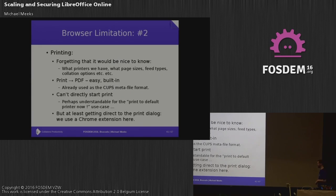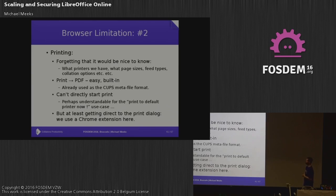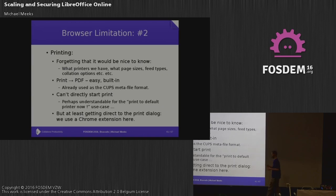Printing is another unpleasant area. Forget knowing what printers are attached, what paper sizes or feed options they have — just being able to trigger the print dialogue would be nice. I have sympathy with the idea that JavaScript shouldn't be printing stuff automatically. But at least having some direct access to the print dialogue would be helpful. PDF is the obvious mechanism here, and browsers are typically very good at PDF these days — we use it as our CUPS metafile format on Linux anyway, so we're good at making PDFs.